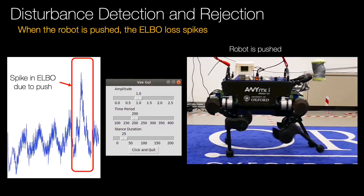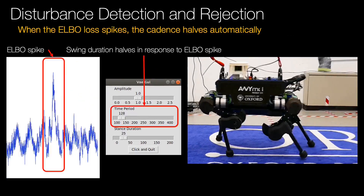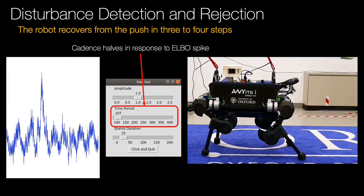The robot has now been pushed by the push broom quite severely. This has caused the ELBO to spike above a predetermined threshold. Next, the VAE planner halves the swing duration to aid in recovery from the disturbance. This is inspired by studies into human locomotion, which report that an increase in cadence is a recovery response to both push and trip incidents.